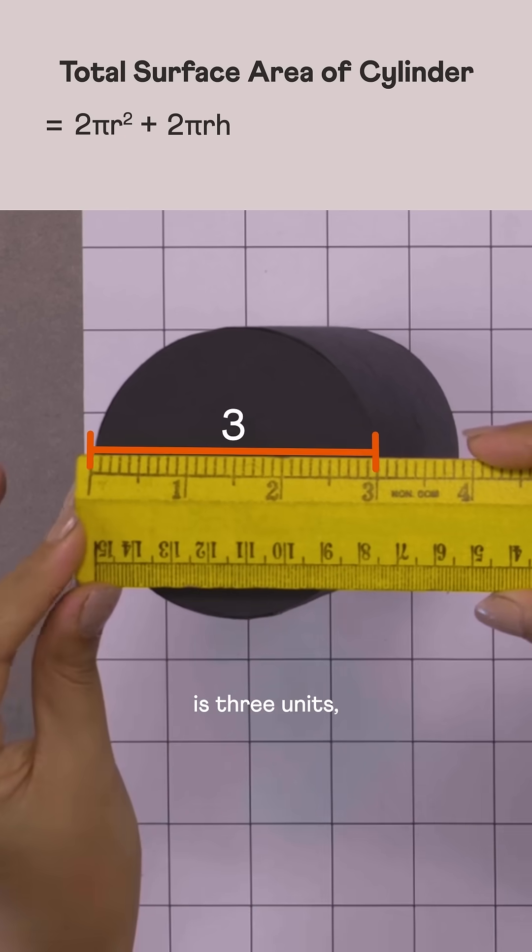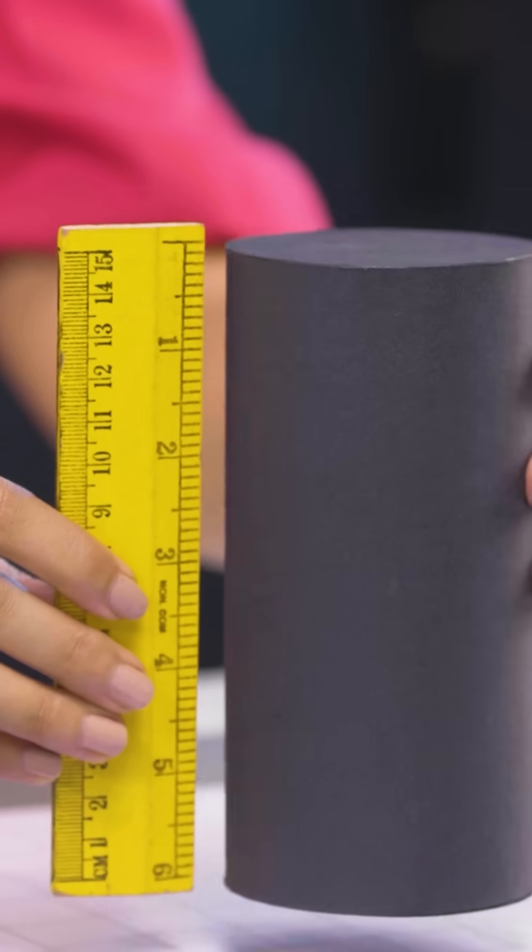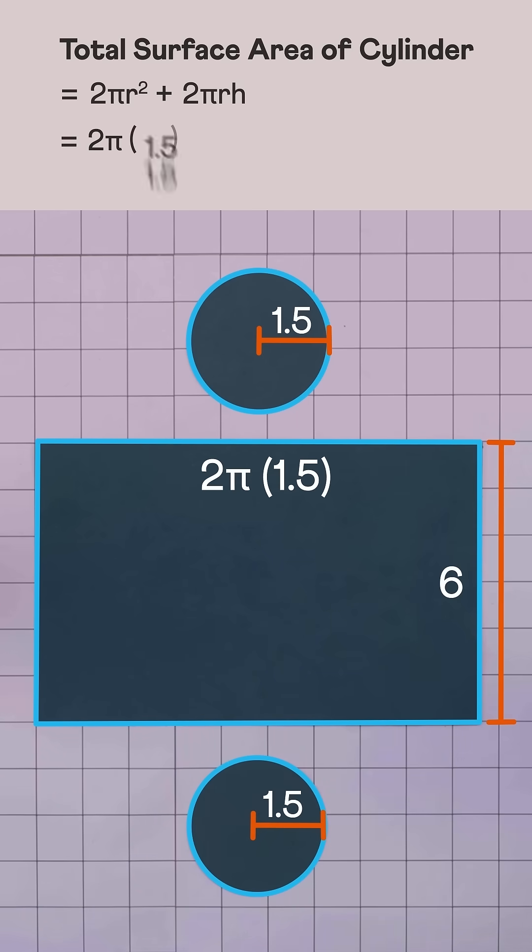the diameter of this cylinder is 3 units, so its radius is 1.5 units and its height is 6 units. Let's plug in these values. We get the total surface area of this cylinder as 22.5 pi square units.